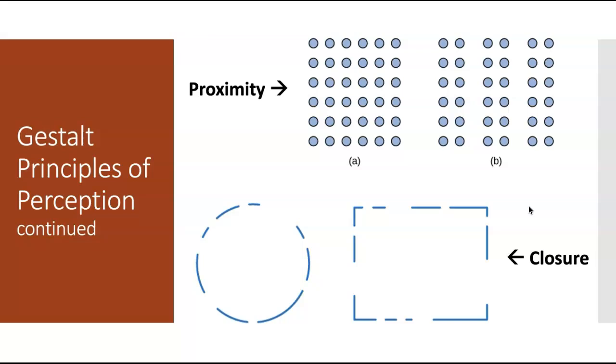We then have the principle of closure, which is basically the idea that our brain will fill in the gaps. It's the idea that we organize our perceptions into complete objects rather than as a series of these individual parts. So it would suggest that we will perceive a complete circle here and a rectangle here rather than a series of these little segments. Obviously, you still see the gaps there. The point is that despite those gaps, you will still view that as a circle and a rectangle rather than just random lines.